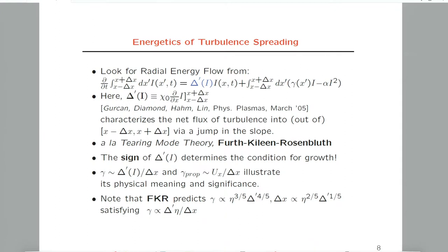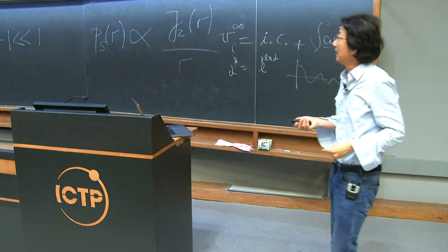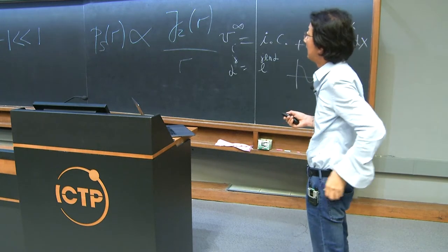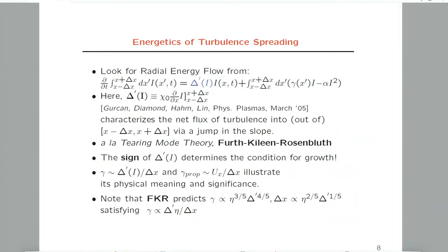Delta prime basically characterizes the net flux of turbulence into this region, or the free energy stored in equilibrium current gradient injecting energy to the fluctuation. The sign of delta prime determines the condition for growth, and from dimensional analysis, the growth rate should go like delta prime over the radial extent, and also propagation velocity over radial extent.